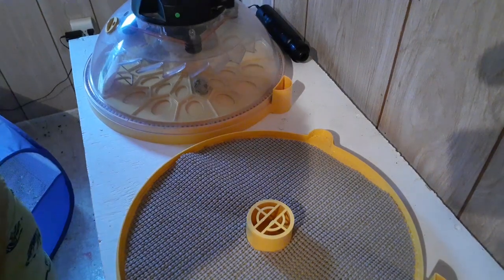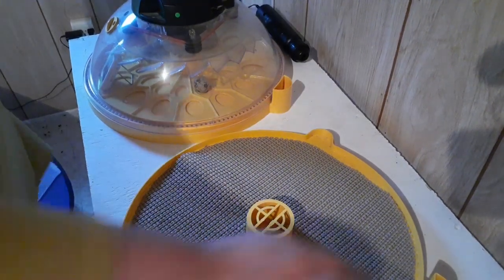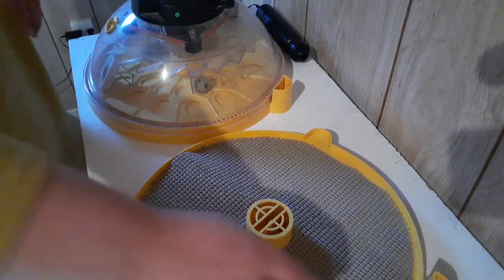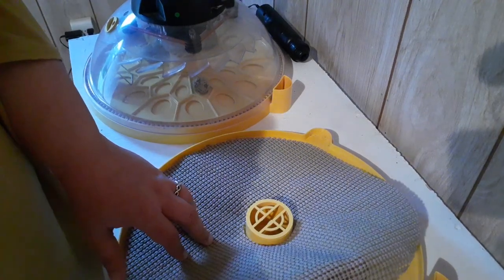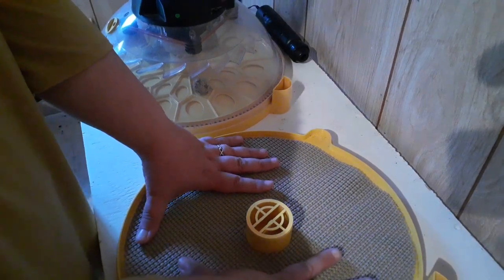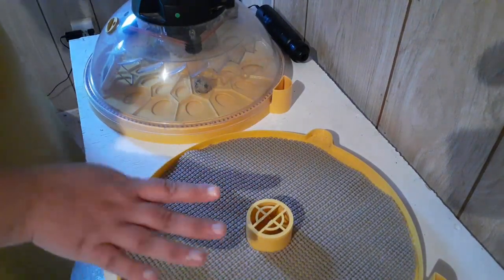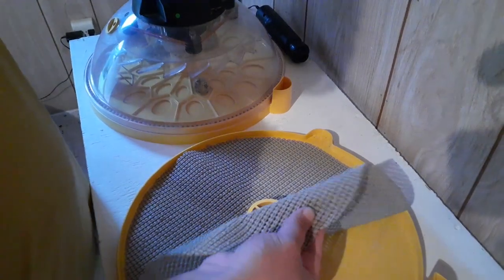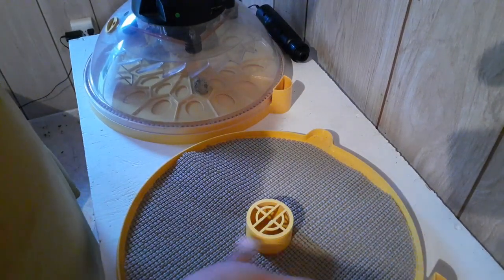The first thing you want to do is prep your hatcher. So I'm just going to take the top off the hatcher. So this hatcher has literally nothing. No turner, nothing. I have a mat down that I cut from some of that shelf paper, that kind of padded, sort of waffly weave shelf paper. I use that.